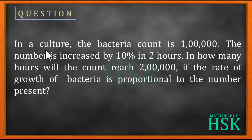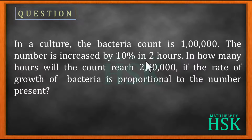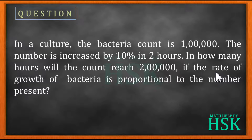So the question is: in a culture where the bacteria are grown, the initial bacteria count is 100,000, and after two hours it is increased by 10%. We have to calculate the time in which the bacteria count reaches 200,000. The most important line is that the rate of growth of the bacteria is proportional to the number present.